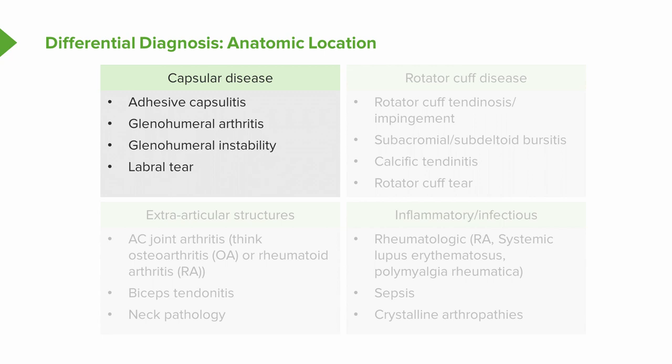Having reviewed the anatomy, I like to think about the different causes of shoulder pain grouped into four main categories. The first is capsular disease, referring to the articulation of the humeral head with the glenoid fossa and glenoid labrum. This includes adhesive capsulitis, glenohumeral arthritis, glenohumeral instability where the humeral head shifts too much, or a labral tear — which may also cause concomitant glenohumeral instability.